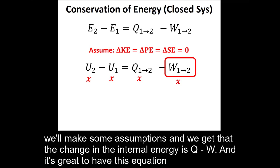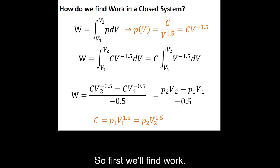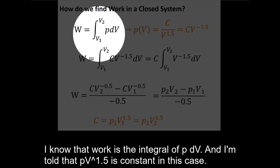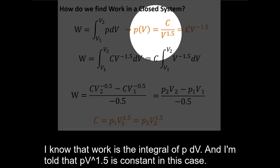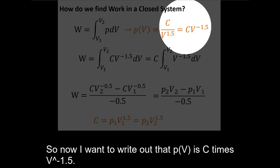It's great to have this equation, but we don't know any of this information. So first we'll find work. I know that work is the integral of P dV, and I'm told that PV^1.5 is constant in this case. So now I want to write out that P as a function of V is C times V^-1.5.